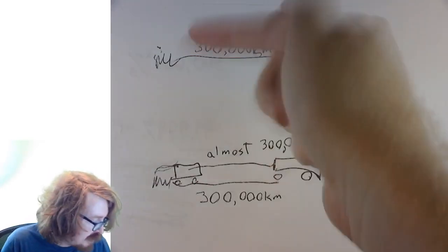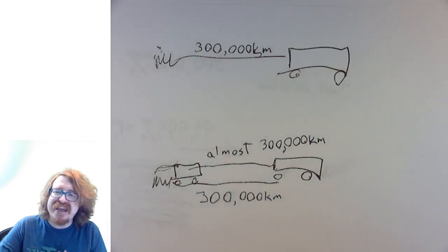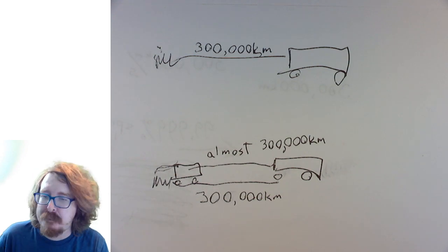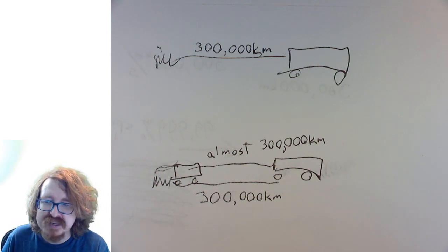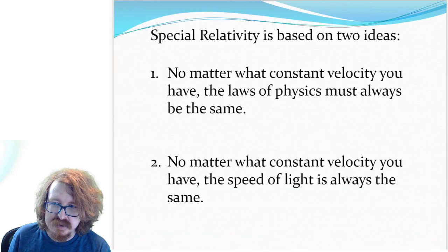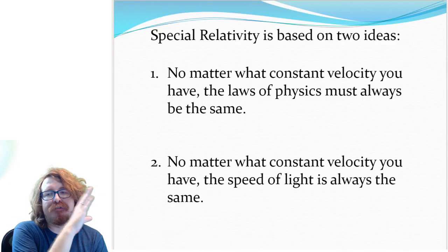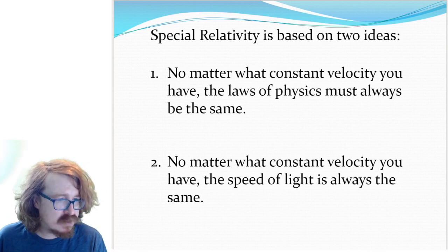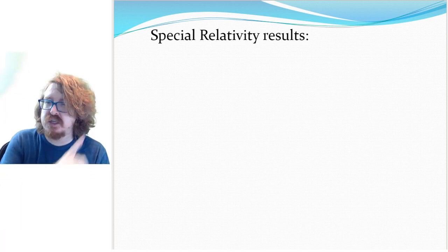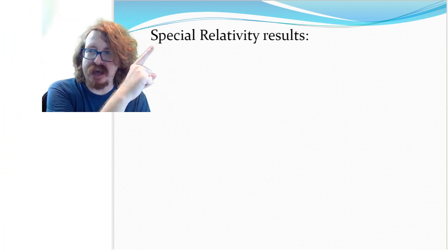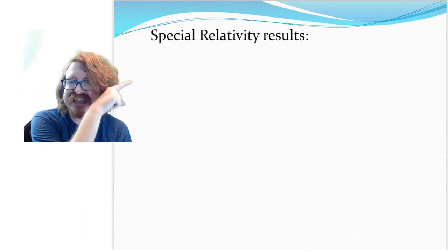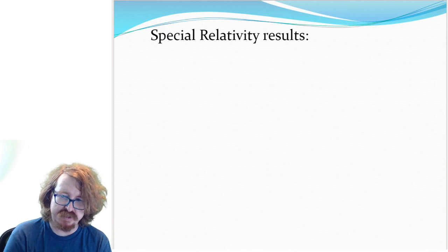That discrepancy makes a lot of things get all messed up. Now that we've got the two major things that relativity is based on out of the way, what does all of this mean for us? What does all of this mean for reality? That's what we're going to talk about now - the results of special relativity. We're going to list three results here, and hopefully we'll get through all three of them today.